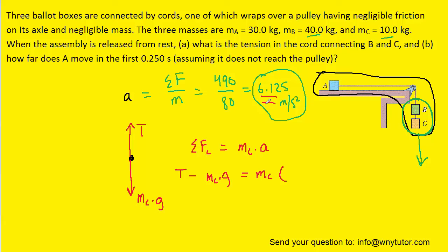Since the system accelerates at about 6 meters per second squared, then block C individually also accelerates at that rate. But because it's accelerating downward, we have to make sure to call that acceleration negative 6.125. Very important to include that negative sign.